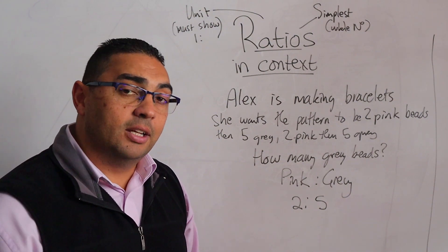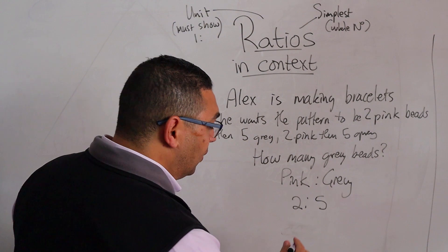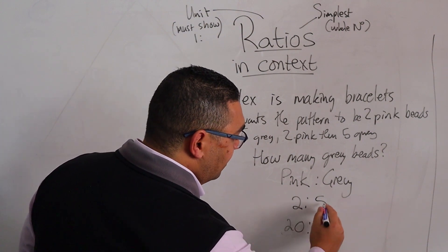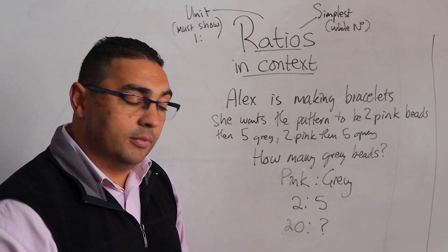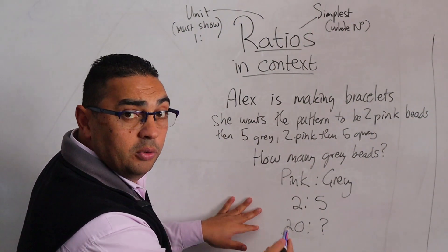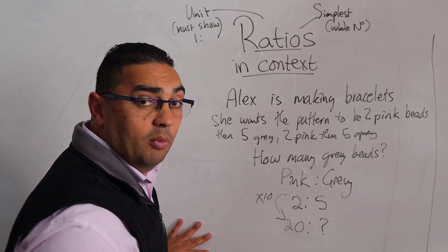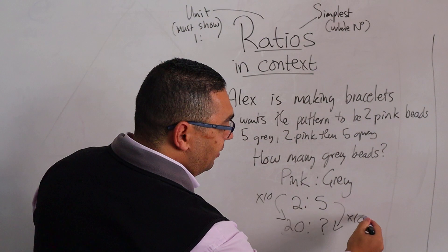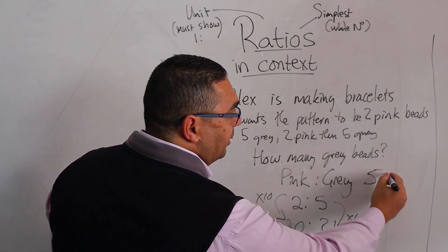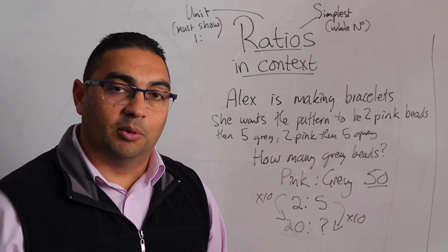And what do we know? We know that she has 20 beads. So we know that she has 20 pink beads, but we don't know how many gray beads she has. Now how did I get from 2 to 20? Multiplied by 10. And what I do to one side, I'm going to do to the other side. Multiply by 10 and I end up with an answer of 50 gray beads that will be needed.